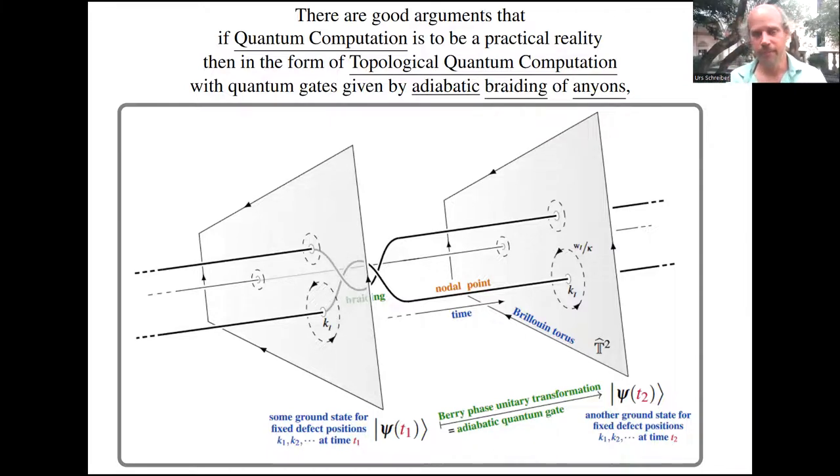The idea is to adiabatically move the positions of these defects around so that the world lines trace out a braid, an open knot. Then the ground state changes by a unitary operator which depends only on the homotopy class of this braid, hence only on the knotted structure, not on the precise detail of where the path runs. In this sense, it would be stable against small deformations and hence protected against errors.